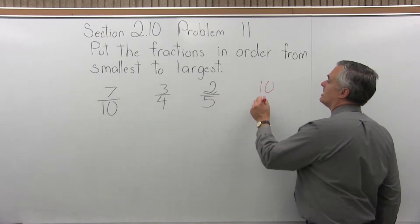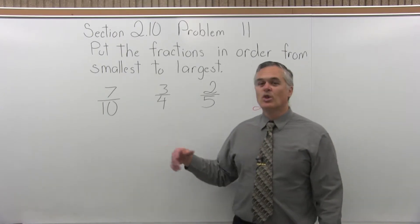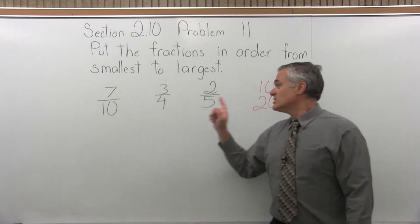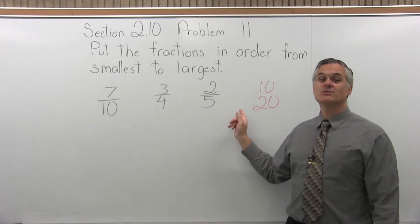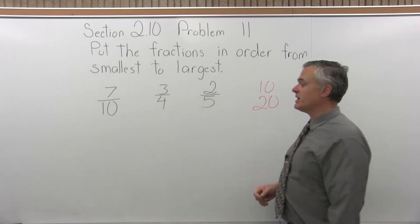So take that largest denominator and double it. It goes up to 20. Will all the denominators now divide into 20 evenly? And actually, they will. 10 times 2 is 20, 4 times 5 is 20, 5 times 4 is 20. They will all divide into 20 evenly, so 20 is a good common denominator.